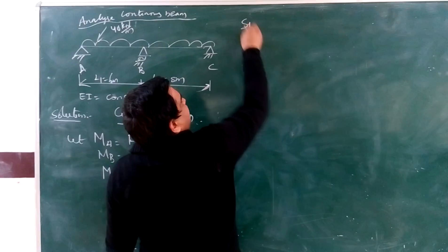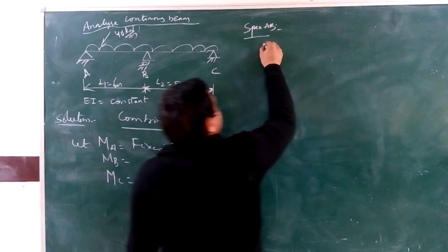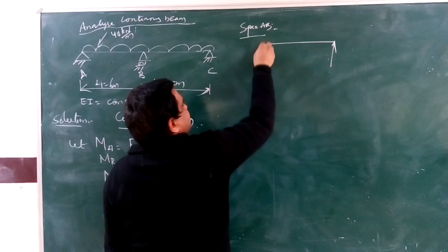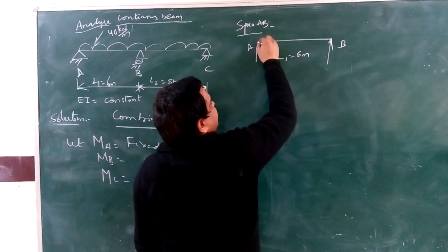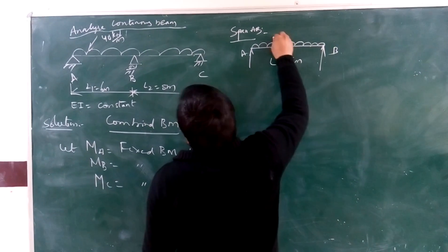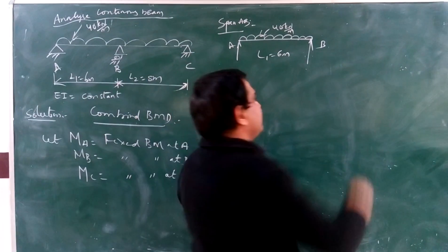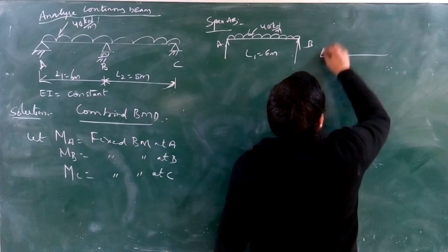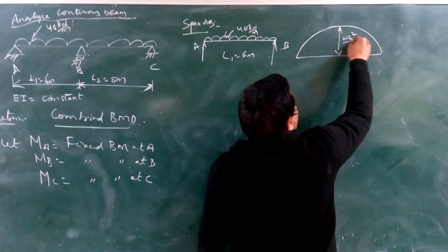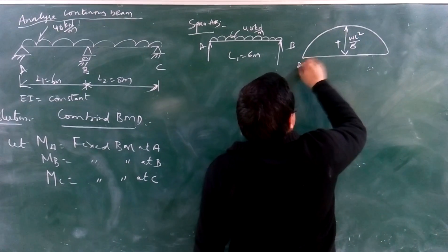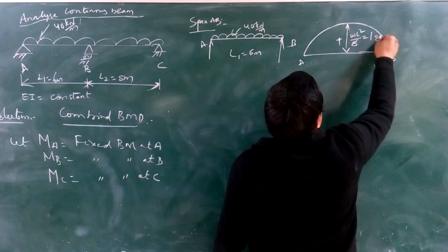Before that, we analyze span AB. AB is a simply supported beam carrying a UDL. The span AB is 6 meters and it carries a UDL of 40 kN per meter. The shape of the bending moment diagram is parabolic, and it is maximum at the midpoint of the span. Its value is WL²/8, which equals 180 kNm.